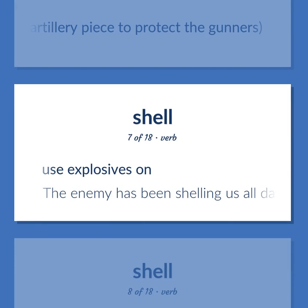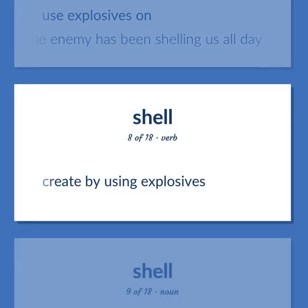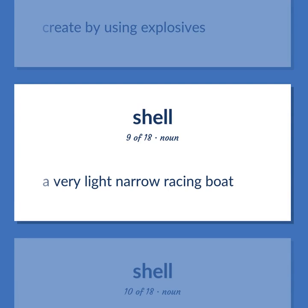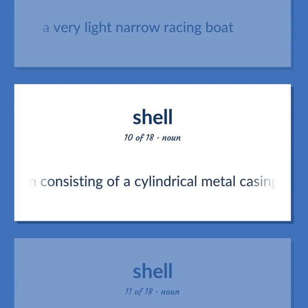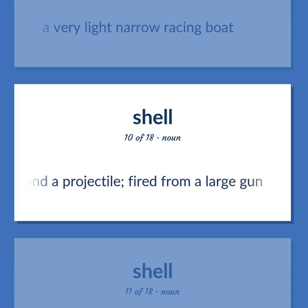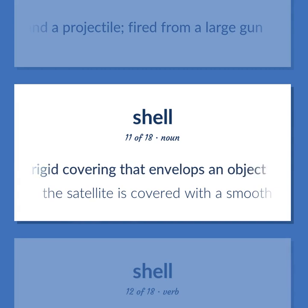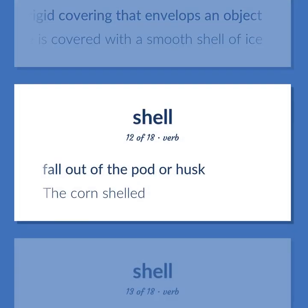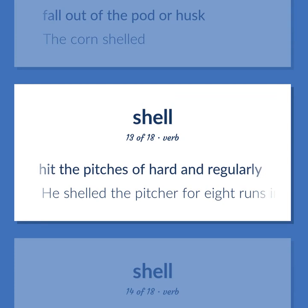To use explosives on — the enemy has been shelling us all day. To create by using explosives. A very light narrow racing boat. Ammunition consisting of a cylindrical metal casing containing an explosive charge in a projectile, fired from a large gun. A rigid covering that envelops an object — the satellite is covered with a smooth shell of ice. To fall out of the pot or husk — the corn shelled. To hit the pitches hard and regularly — he shelled the pitcher for eight runs in the first inning.